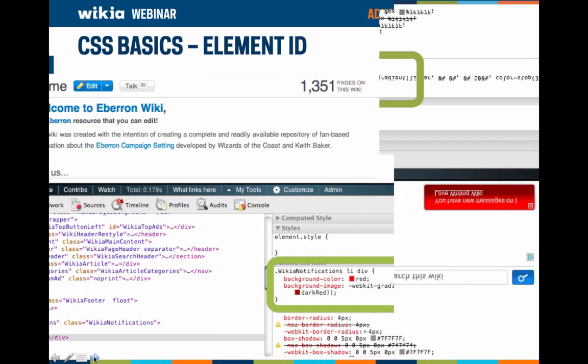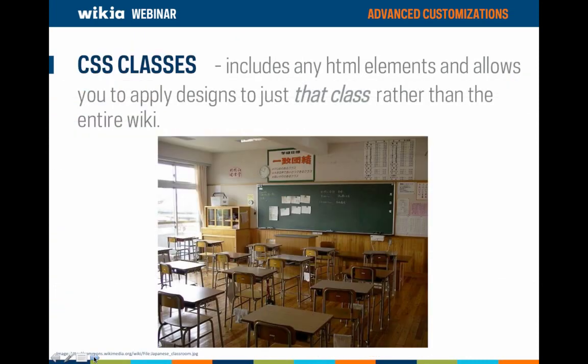Suppose you want to set a specific style to a group of elements but not your entire wiki. In this case you would create a CSS class. A class can include any HTML elements and allows you to apply designs to just that class rather than the entire wiki. For example, to define the styling within an info box, you create a class called 'infobox' on your CSS page, stating how you want the info box stylized — including border, colors, font size, and so on. This means the style will only be applied to the info box and no other part of your wiki.